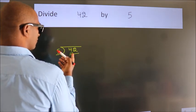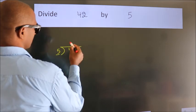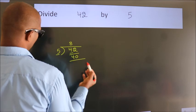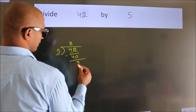A number close to 42 in the 5 table is 5 times 8, which equals 40. Now we should subtract. We get 2.